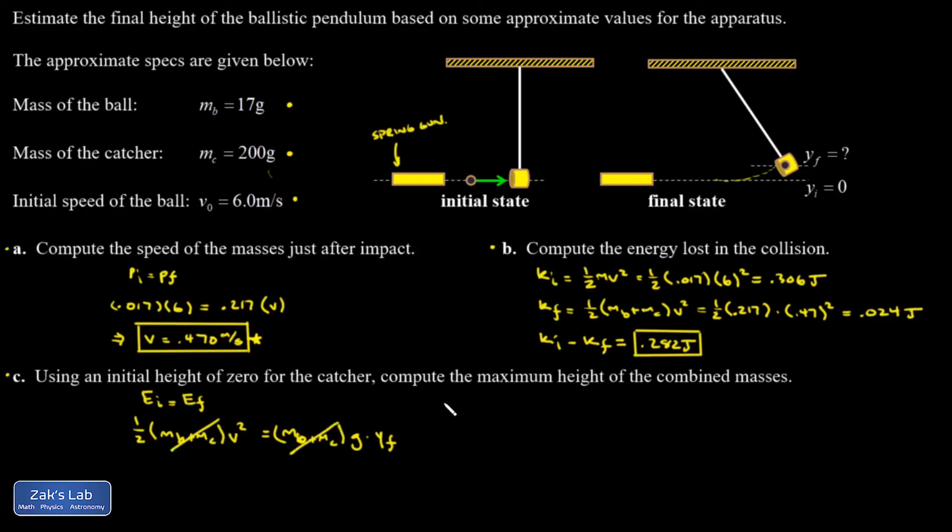The masses cancel out, and I get y final equals v squared over 2g. That's 0.47 squared over twice 9.8, which gives 0.0113 meters or 1.13 centimeters.